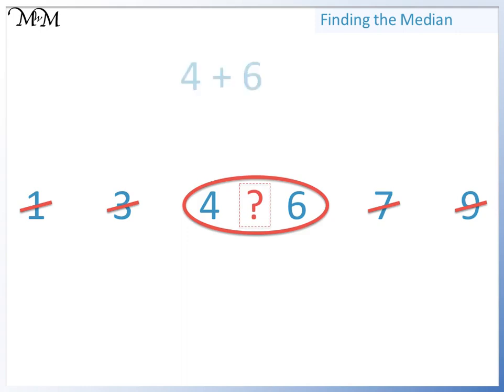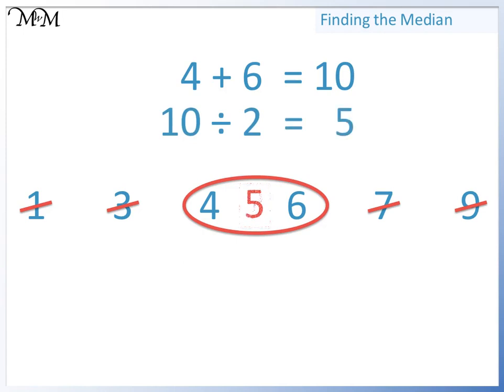So we add the two numbers together. 4 plus 6 equals 10. 4 and 6 are two numbers, so we divide by 2. 10 divided by 2 equals 5. 5 is halfway between 4 and 6. So the median is 5.